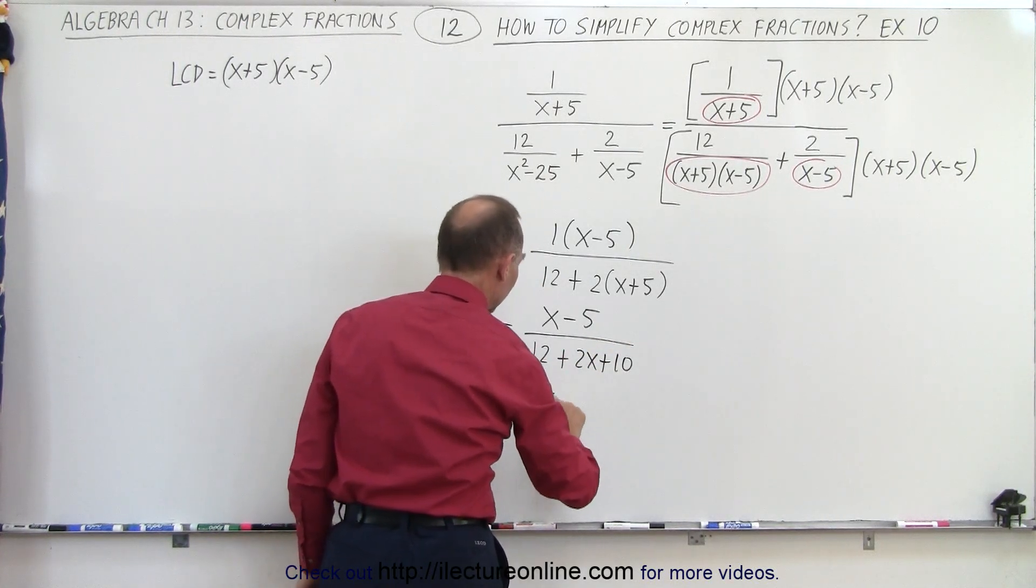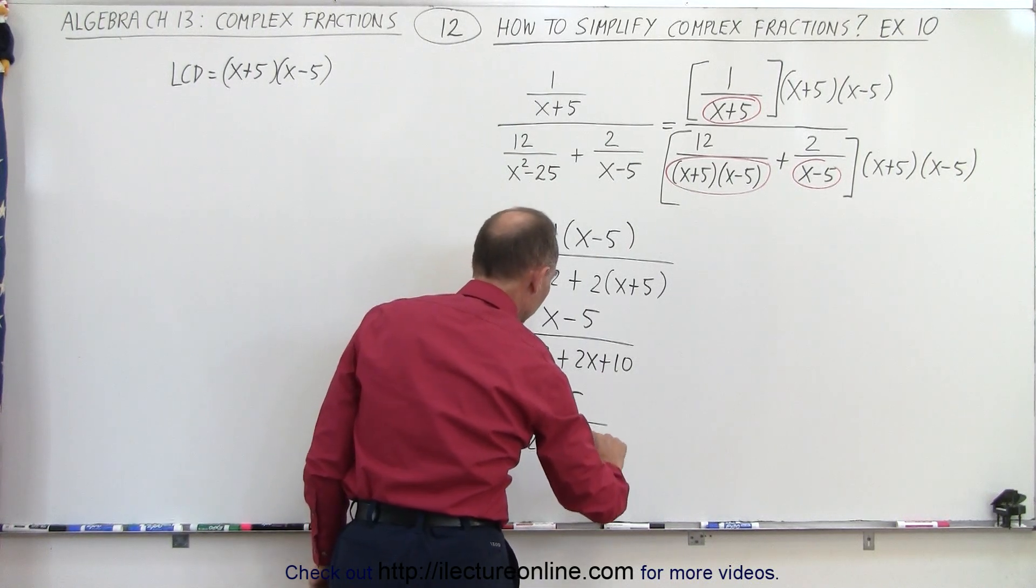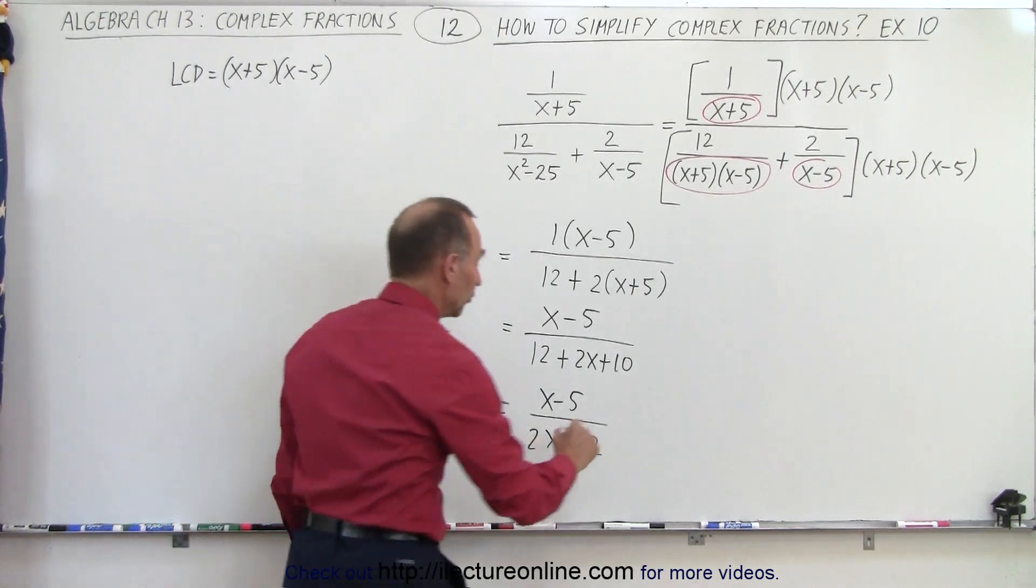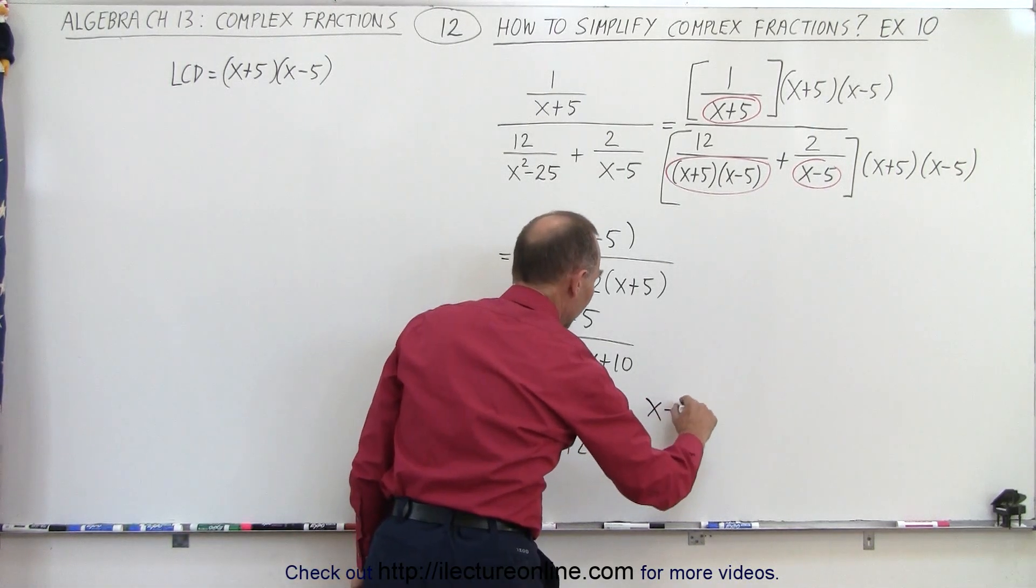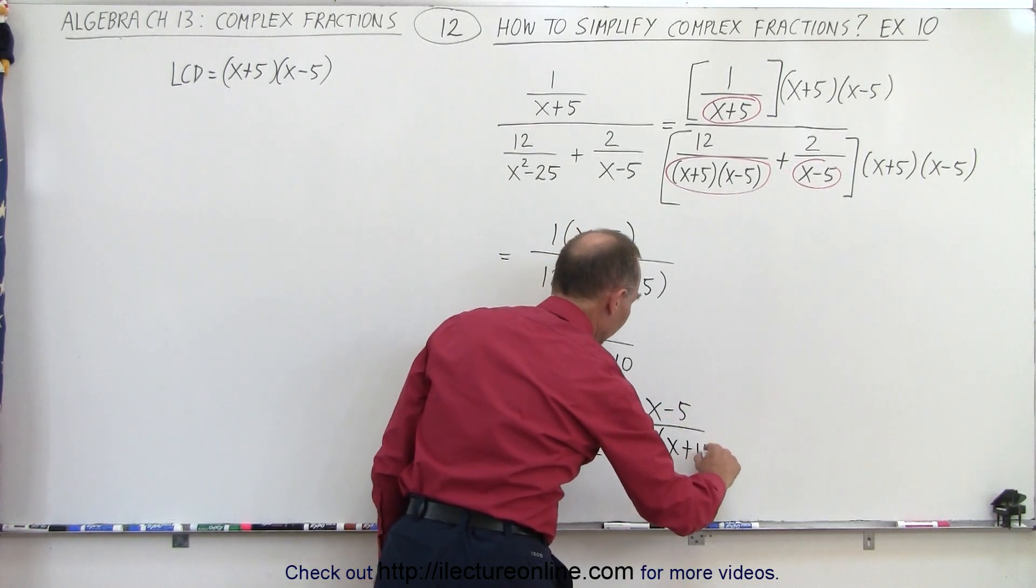which can be simplified to x minus 5, divided by 2x, plus 22. At this point, we could factor out a 2, so this can be written as x minus 5, divided by 2 times x plus 11.